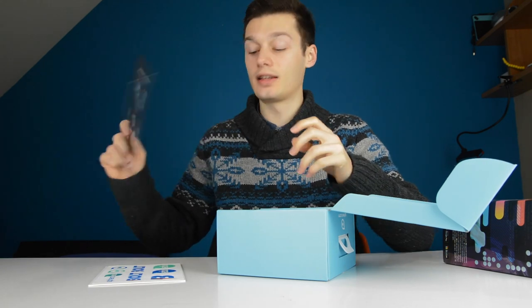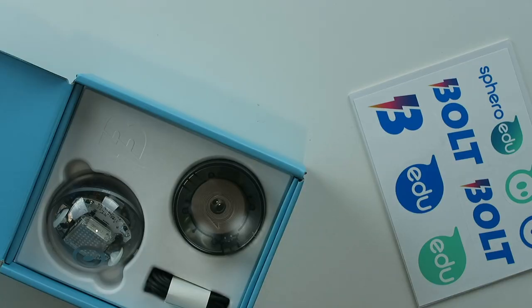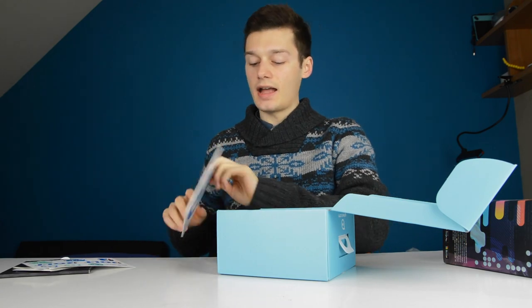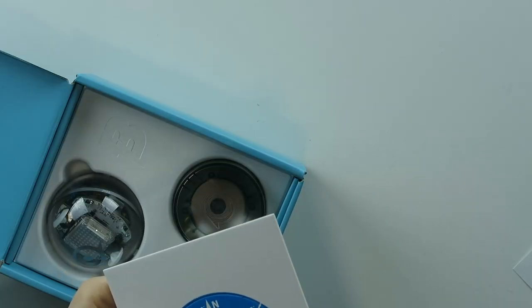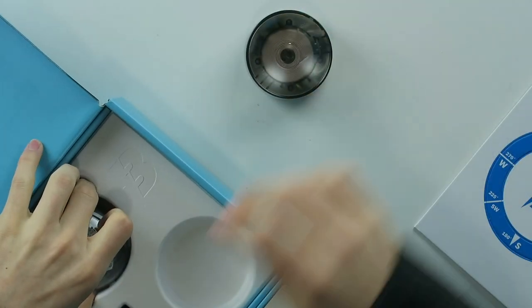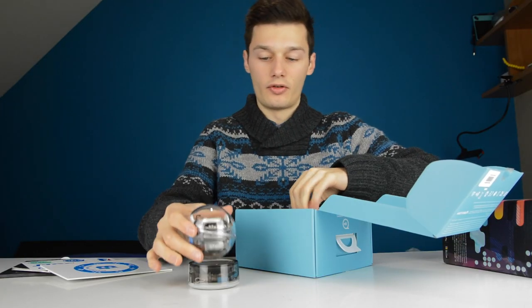Download the Sphero Edu app, connect and discover activities on the app itself. So you have the legal guide over here, which I'm not going to read. And then you have stickers, very nice stickers, and I really have no idea what this is. Heading direction and the clock.